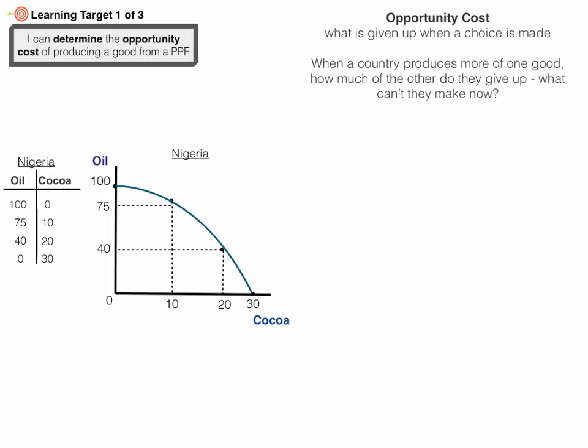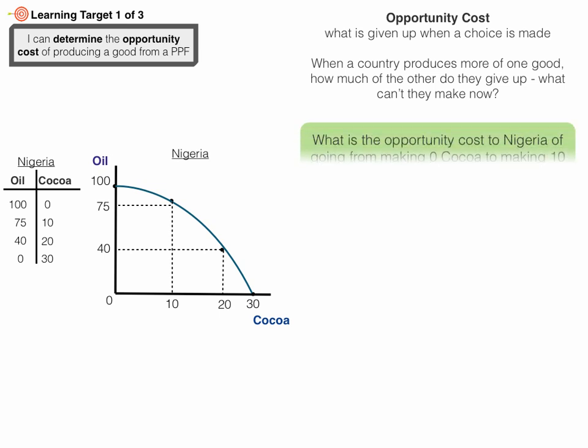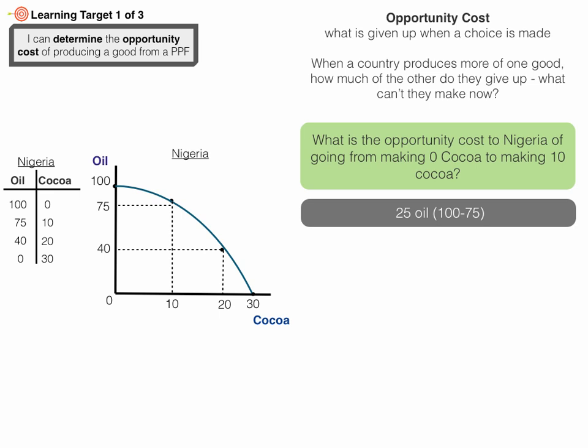Now let's determine the opportunity cost of producing a good from a PPF. The opportunity cost is what is given up when a choice is made. So we ask: when a country produces more of one good, how much of the other good do they give up? For Nigeria, what is the opportunity cost of going from making zero cocoa to making 10 cocoa? At zero cocoa, Nigeria was making 100 barrels of oil. If they make 10 cocoa, they can only make 75 barrels of oil. So they give up 25 oil — 100 minus 75 — because they chose to make 10 cocoa.